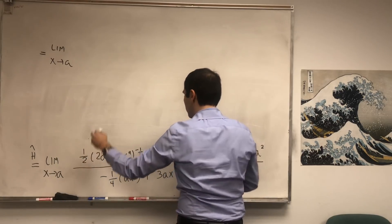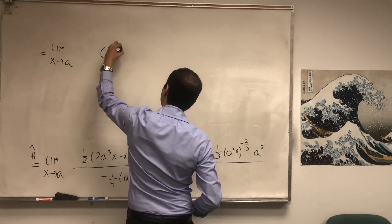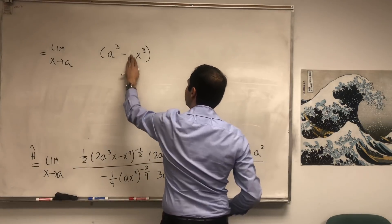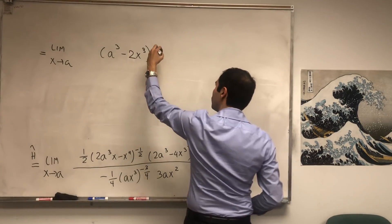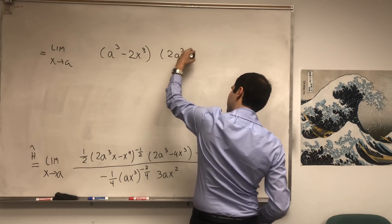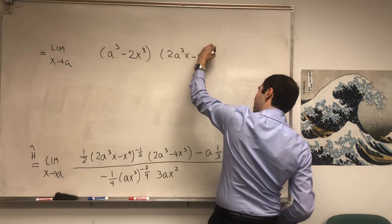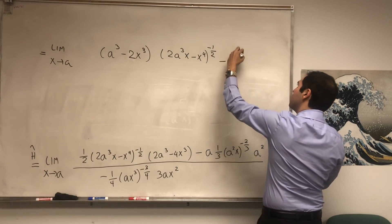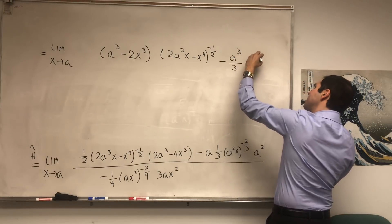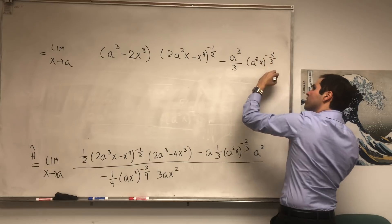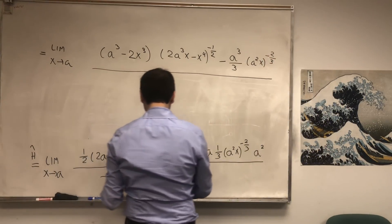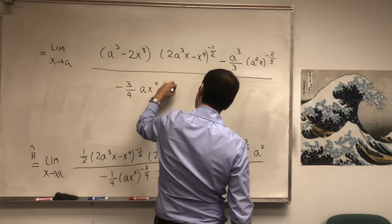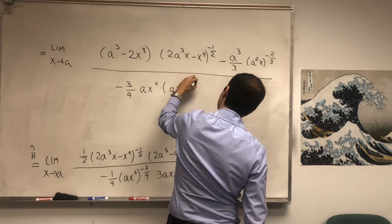So this divided by two becomes a³ minus 2x³ times (2a³x - x⁴)^(-1/2) and then minus a³ over three times (a²x)^(-2/3). All this divided by minus three-quarters ax² times (ax³)^(-3/4).